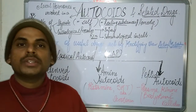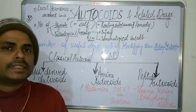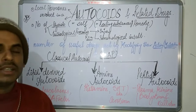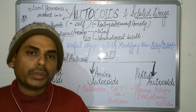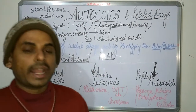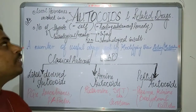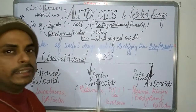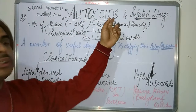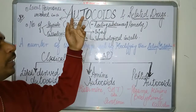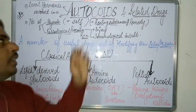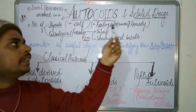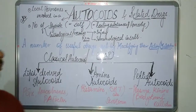We are going to have a short review of what autocoids actually are. The term autocoid is derived from a Greek word and can be split into two parts: 'auto' and 'echos'. The word 'auto' means self, and 'echos' means healing substances or remedy.